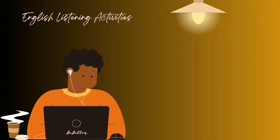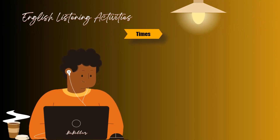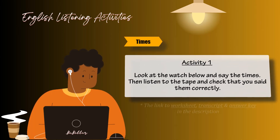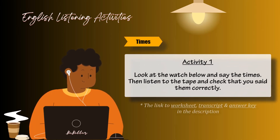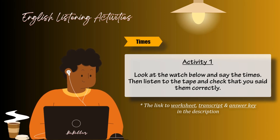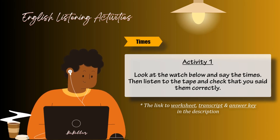English Listening Activities: Times. Activity 1. Look at the watch below and say the times. Then listen to the tape and check that you said them correctly.